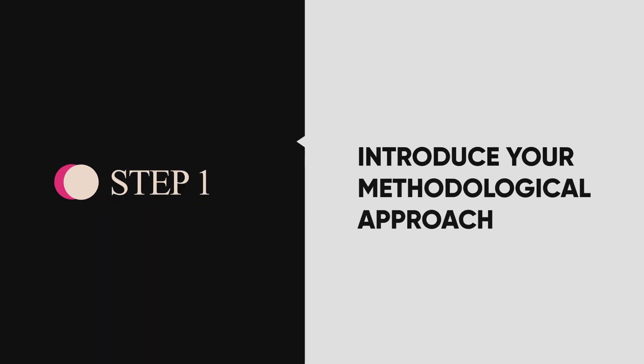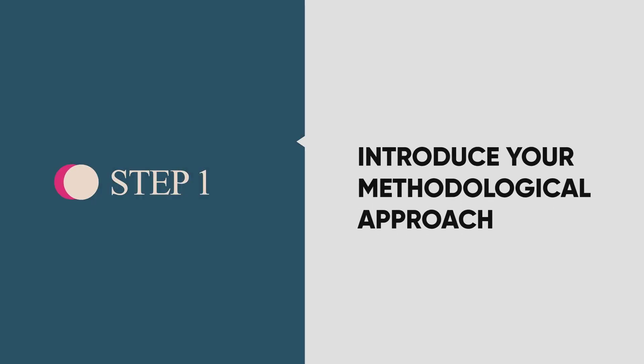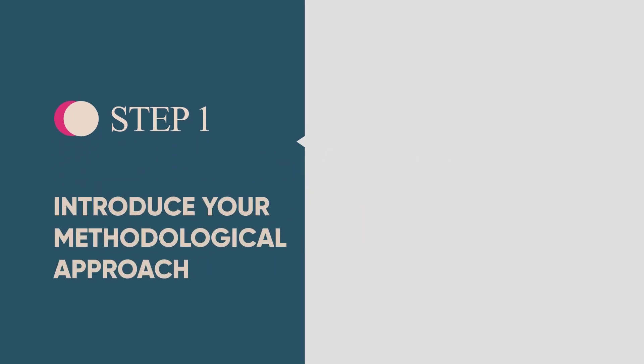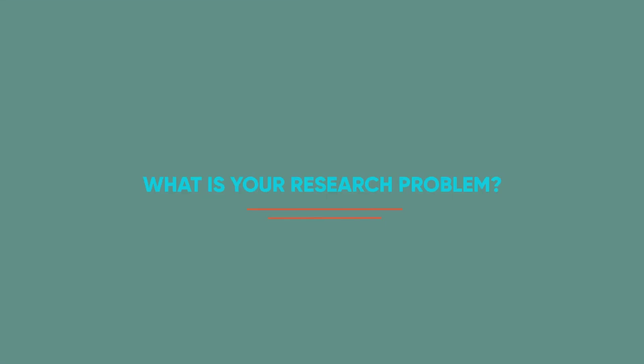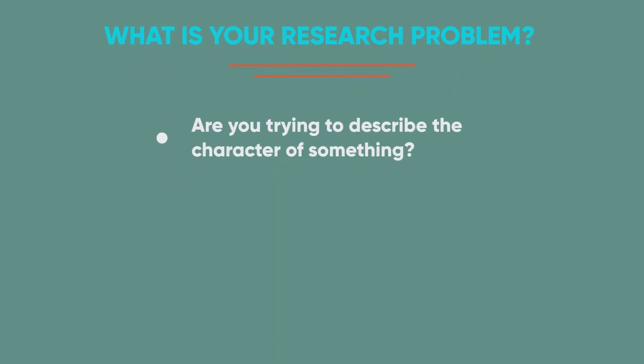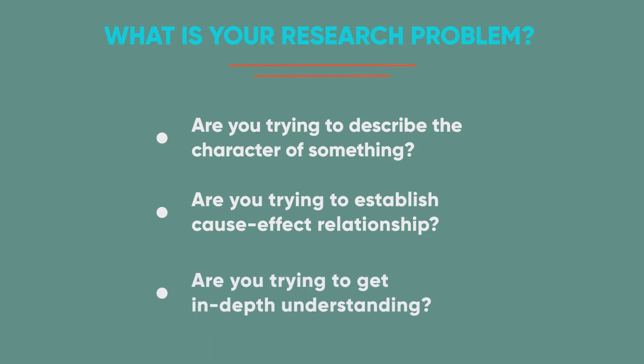Step 1: Introduce your methodological approach. This is the step where you remind your readers overall approach of your study. Here you explain what is your research problem. In this area, you can introduce whether you are trying to describe character of something, trying to establish cause-effect relationship, or trying to get in-depth understanding.